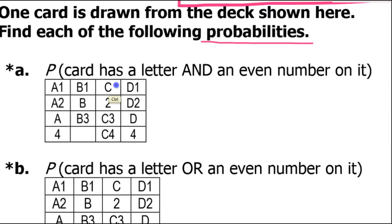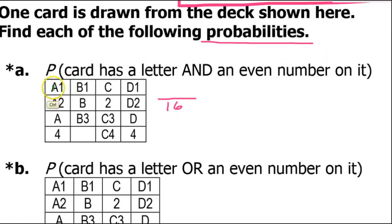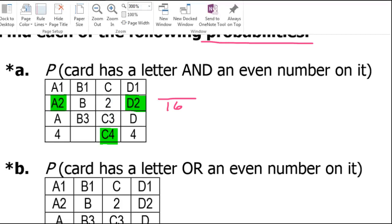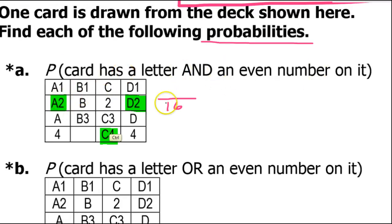Let's find the probability that a card has a letter and an even number on it. Target over total — the total is 16. The target is cards that have both a letter and an even number. Going through the deck and highlighting those cards, there are three cards that have a letter and an even number. So the probability will be 3 out of 16 for that one.